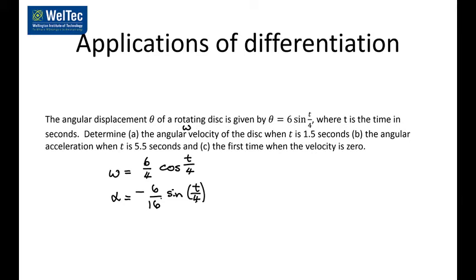For part c, the first time when the velocity is zero, you need to solve where omega equals zero. That means solving (6/4) cos(t/4) equals zero, and solving that gives t equal to 2π seconds.